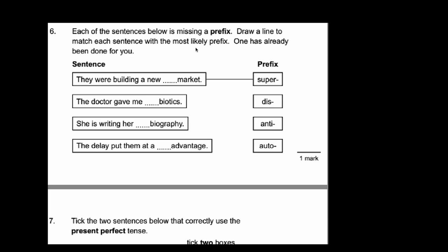Number 6. Each of the sentences below is missing a prefix. Draw a line to match each sentence to the most likely prefix. One has been done for you. So a prefix is a section of a word that goes at the beginning, hence the word 'pre'. Basically you need to know what these words mean. It's a bit of a matching exercise really. So let's have a look. The doctor gave me antibiotics. You should know that that is anti. She's writing her biography. She's writing it herself. It is an autobiography. The delay put them at a disadvantage. And that's the correct answer for that question.